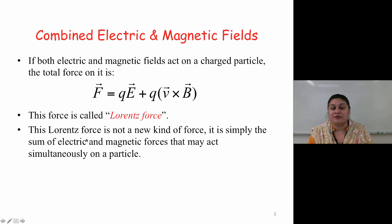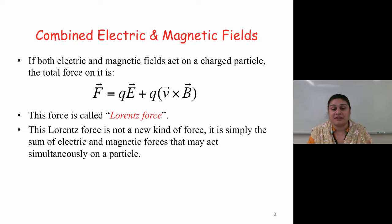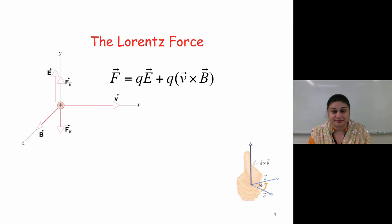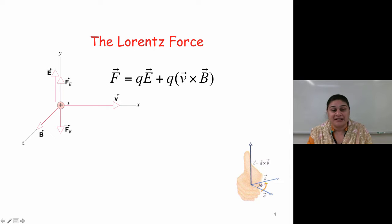Note: Lorentz force is not a new kind of force. It is simply the sum of the electric and magnetic forces that act simultaneously on the particle itself. Lorentz force is QE plus QV cross B, where E and B act on the particle simultaneously.